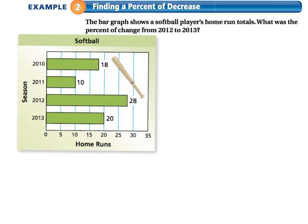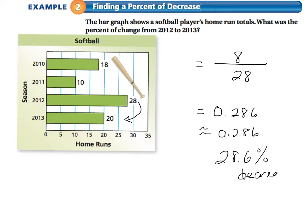So now let's find a percent of decrease. The bar graph shows a softball player's home run totals. What was the percent of change from 2012 to 2013? Well, our percent of decrease is going to be equal to the change. The change from 28 to 20 is a decrease of 8 divided by the original amount of 28. That gives us approximately 0.286. And if we rounded, that would be about 28.6% decrease.